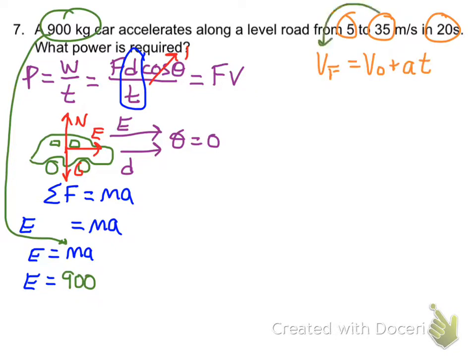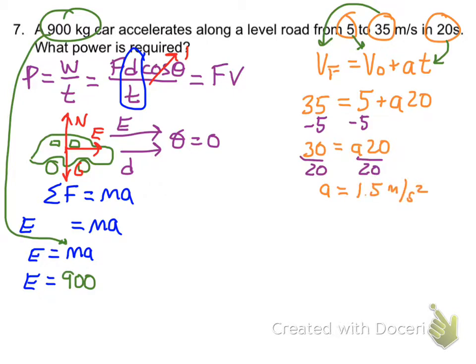I can put the final velocity of 35 meters per second, the initial velocity is 5 meters per second, and then I can add my time of 20 seconds and do some algebra, and I find out the acceleration is one and a half meters per second squared.